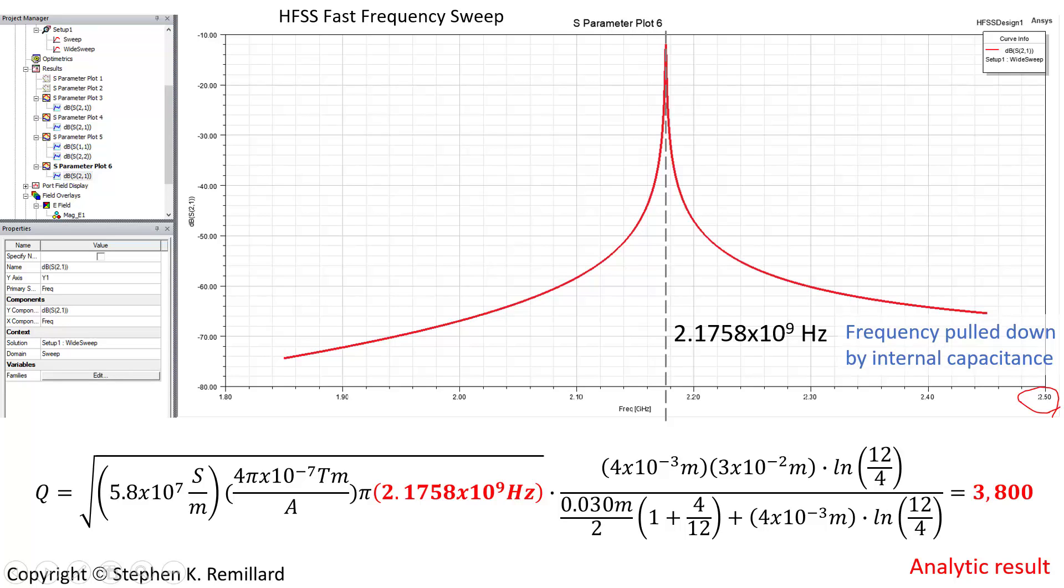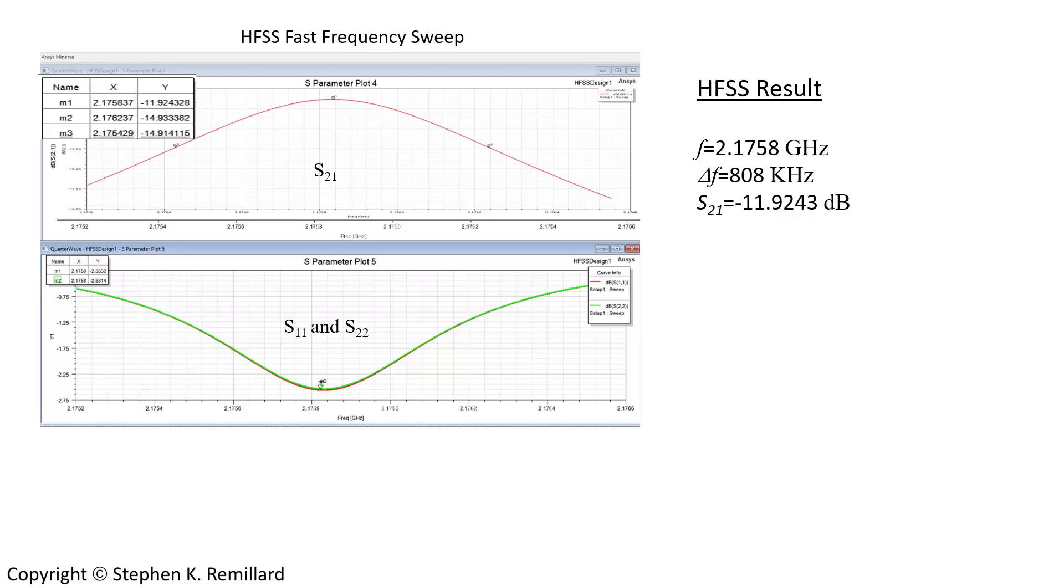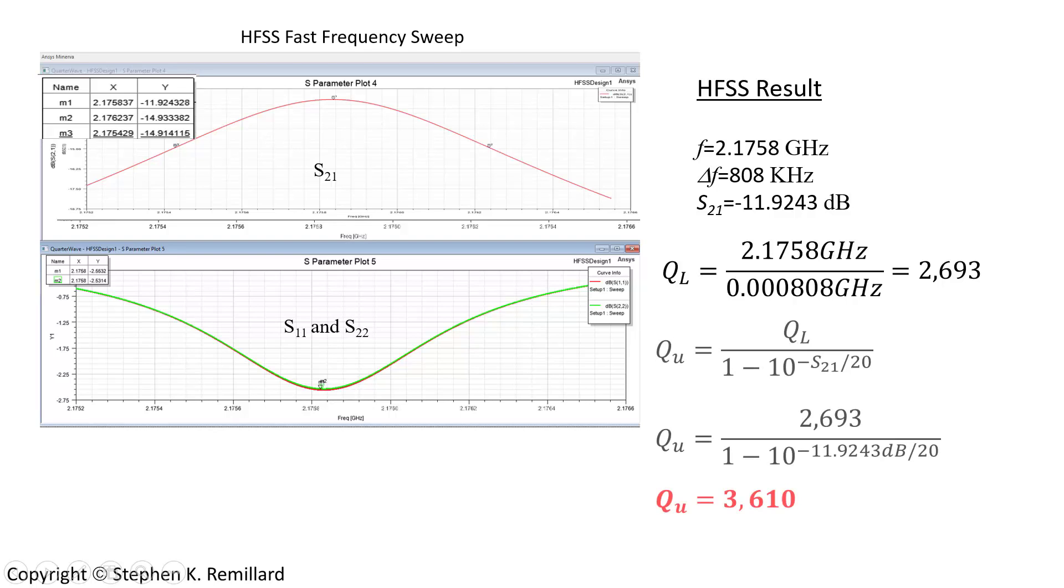As long as I have HFSS going, let's go ahead and calculate the Q of that structure. It had a 3 decibel bandwidth of 808 kilohertz. That's the distance between these markers you can barely see. It had an insertion loss on resonant peak of minus 11.9243 decibels. So that gives a loaded Q, which is just center frequency divided by the bandwidth of 2693, and an unloaded Q, using this expression, of 3610. If you want to see how this unloaded Q measurement is done, you can see my video on measuring unloaded Q, where I do it two ways. One is this way, and another way uses the return loss, S11 and S22, to calculate the unloaded Q from a measurement.